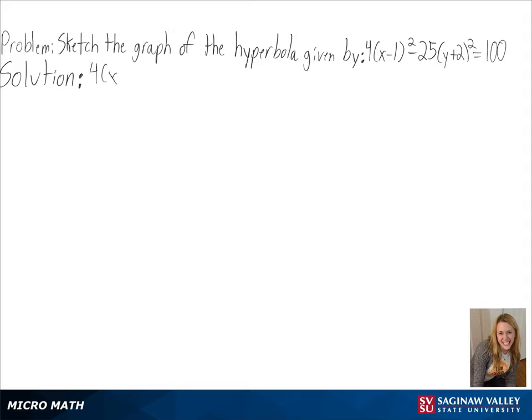Our problem is to sketch the graph of the hyperbola given by 4 times x minus 1 squared minus 25 times y plus 2 squared equals 100.